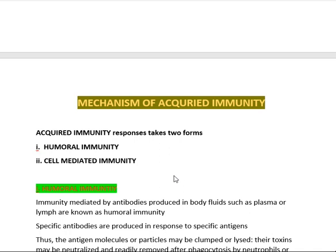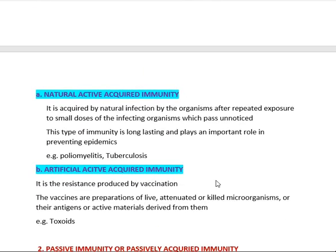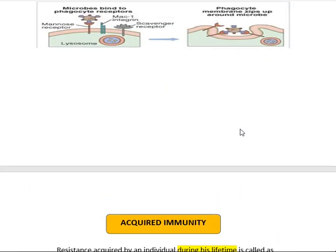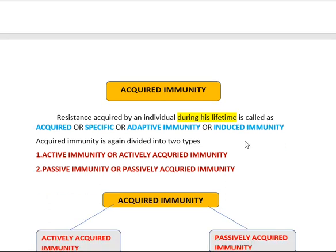If cells are involved in causing immunity, we call it cell-mediated immunity; if antibodies are involved, we call it humoral immunity. These are the two modes of acquired immunity. We will discuss humoral and cell-mediated immunity in detail in a later part of immunology. That concludes the two types of immunity — innate immunity and acquired immunity. Thank you.